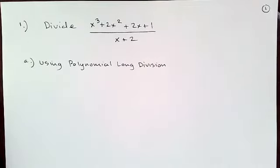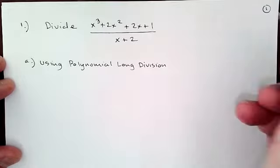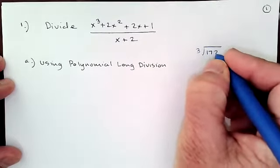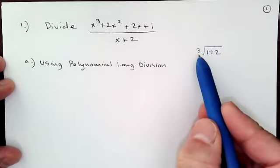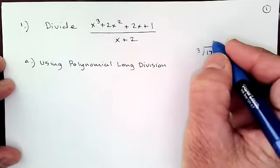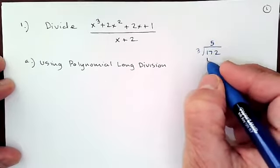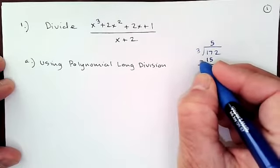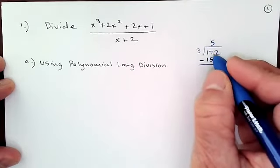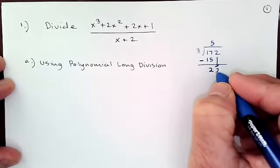Before we do polynomial long division, it might be helpful to think about the division algorithm with numbers. Say I wanted to divide 3 into 172. The first thing you ask yourself is how many times can 3 go into 17? That would be 5 times. We put that 5 there, multiply it by the 3, that gives us 15. We bring that down and subtract — in reality we're subtracting 150 from 172. We subtract and get a 2, then bring down the remaining 2, so now we have 22.